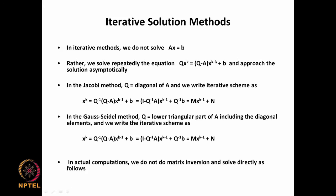In these iterative methods, we do not solve Ax = b directly. We solve it in an indirect way like Q·x^k = (Q - A)·x^(k-1) + b, and approach the solution asymptotically. In the Jacobi method, Q is the diagonal of A, and so the iteration becomes x^k = M·x^(k-1) + N. Similarly, in the Gauss-Seidel method, we choose Q to be the lower triangular part of A including the diagonal elements, and that again can be put in the same form.